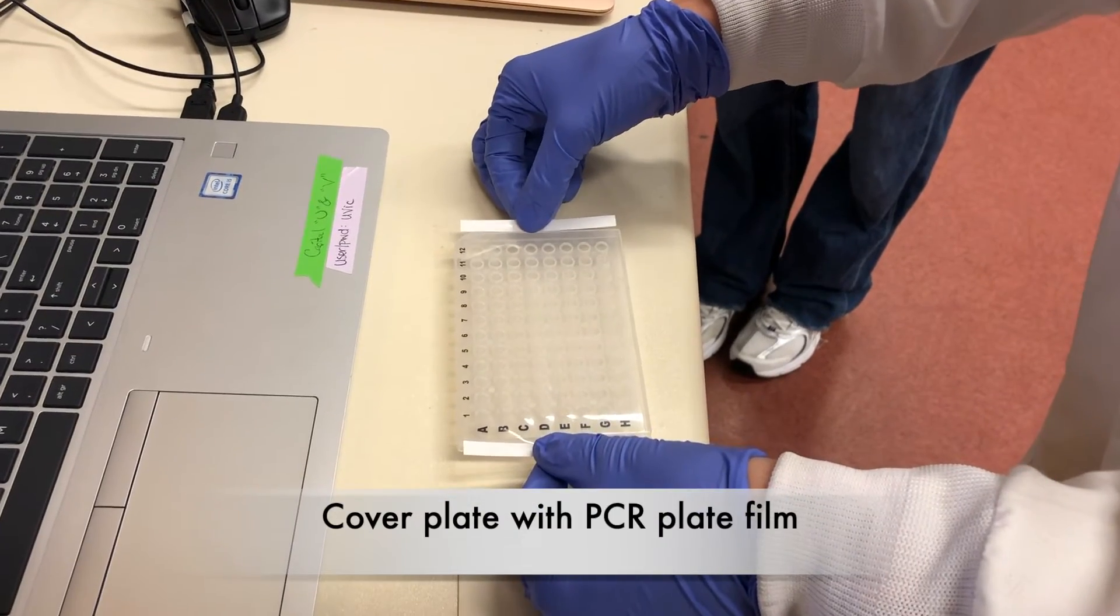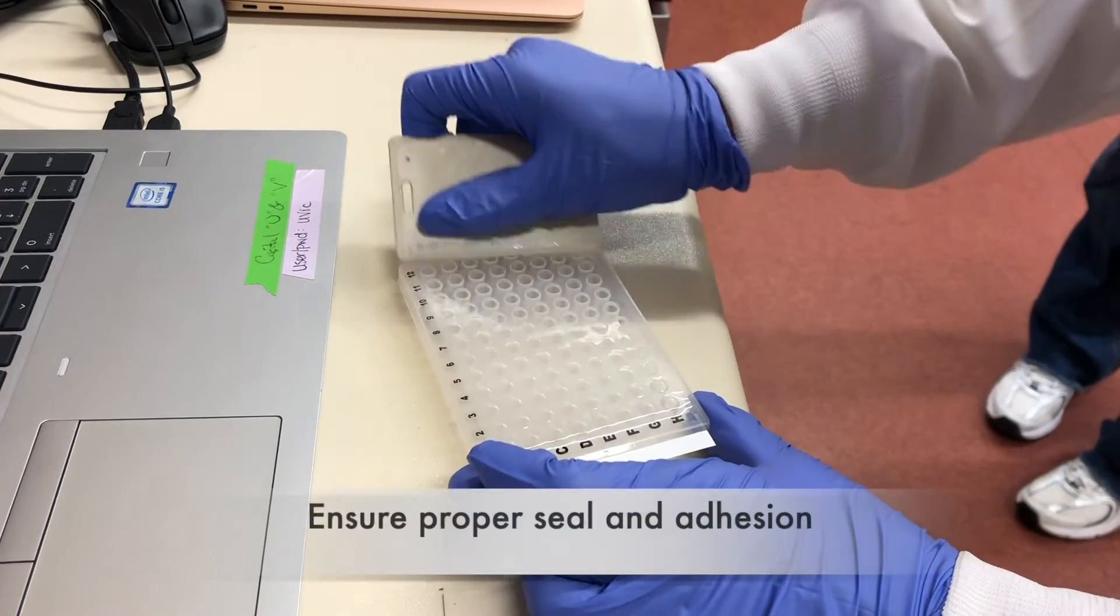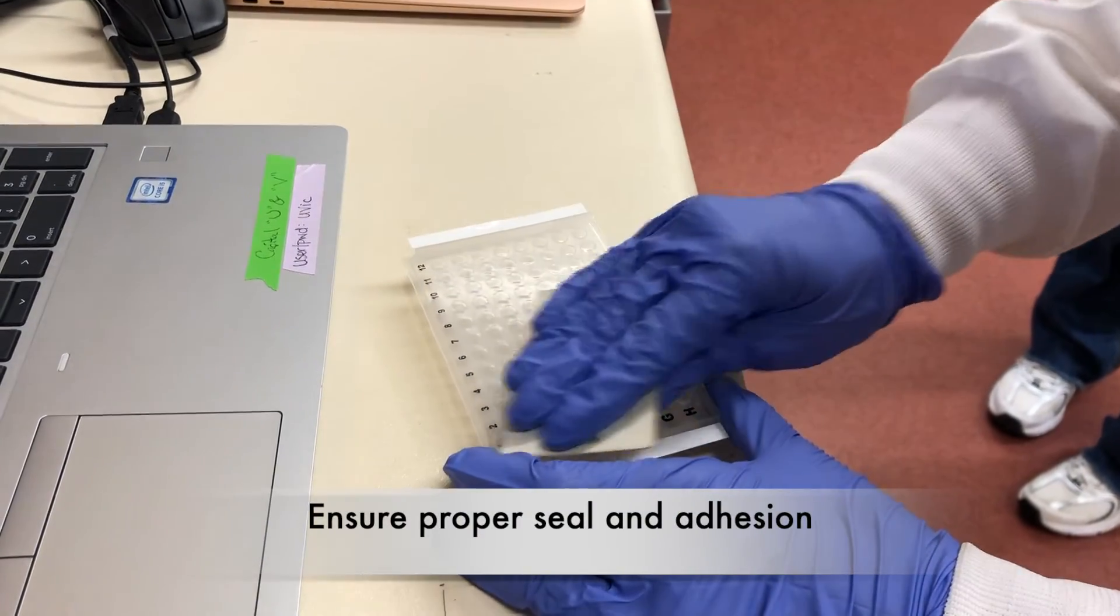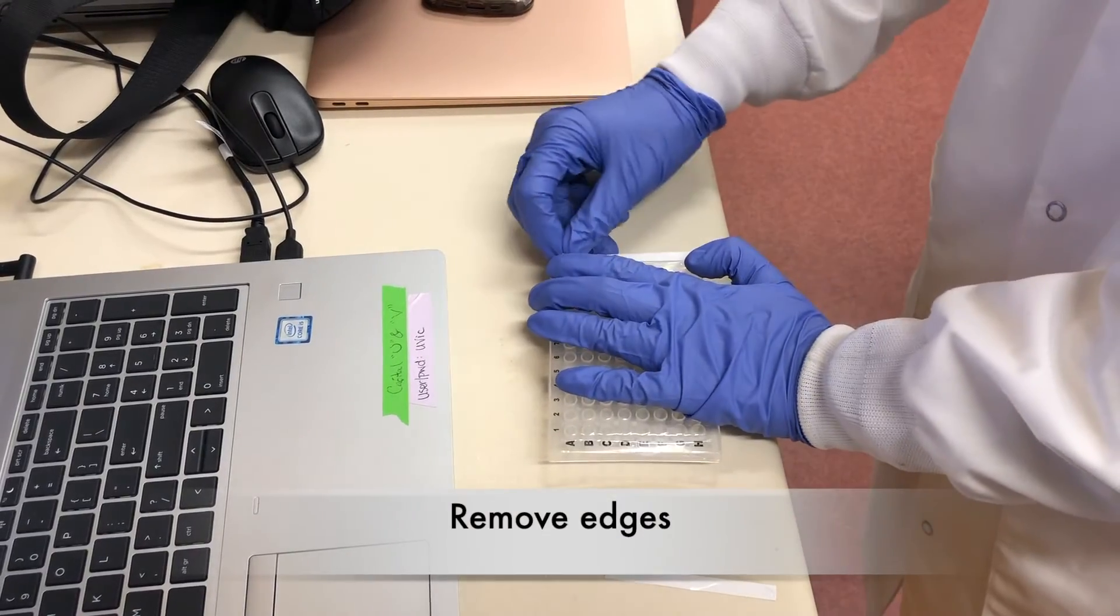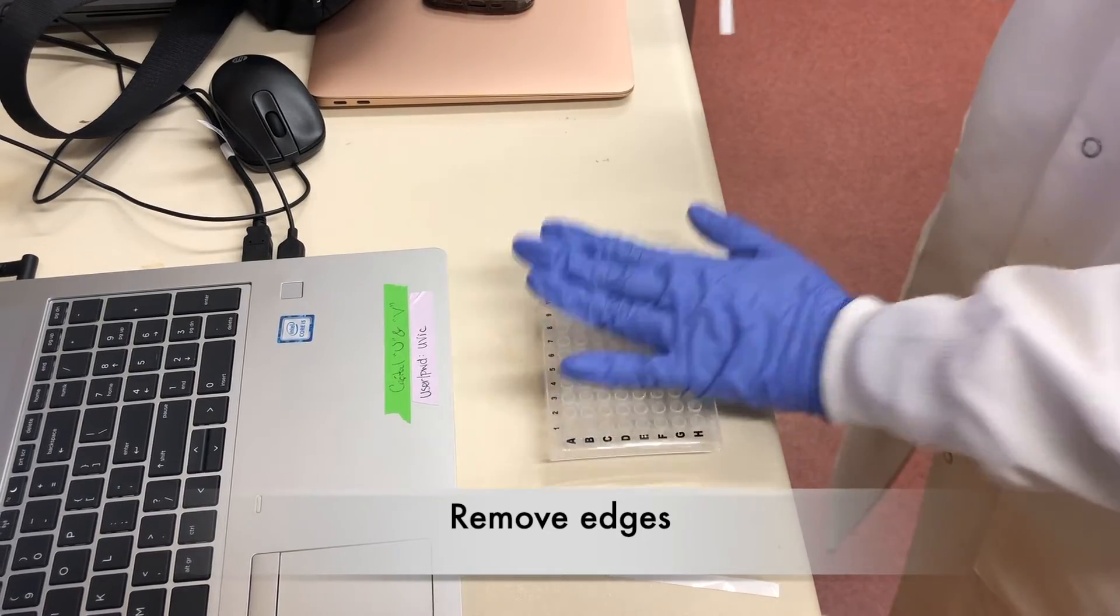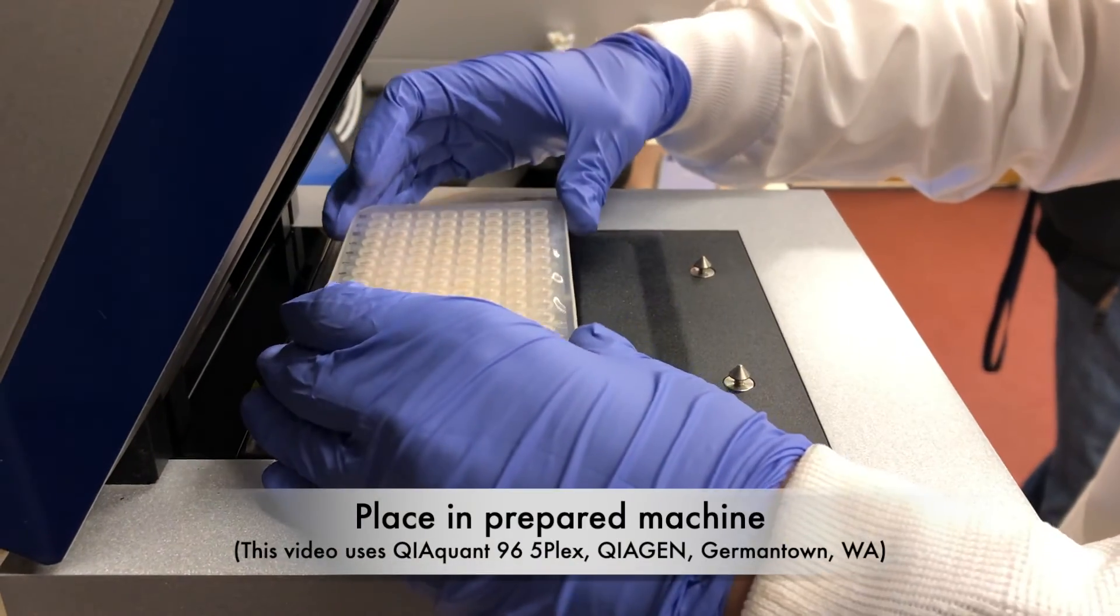Cover the PCR plate with a proper film, then ensure a proper seal with no air pockets. Remove the edges, and then place in the prepared machine.